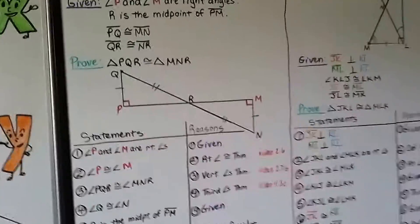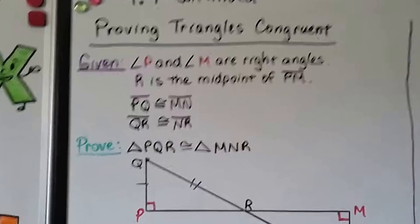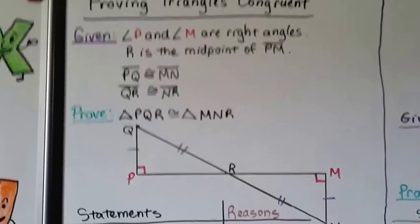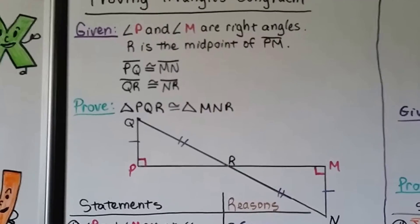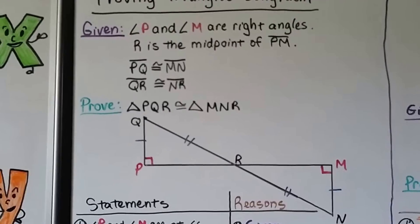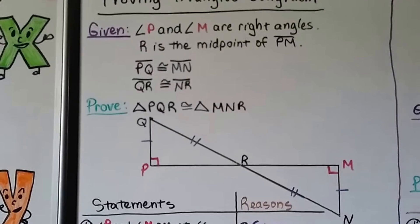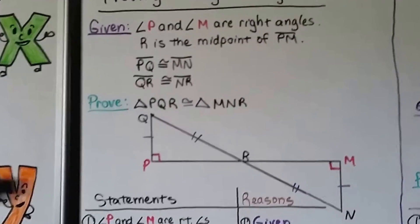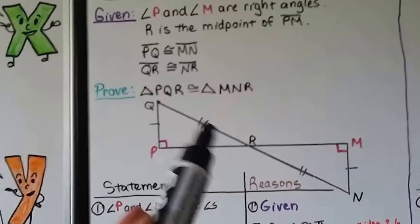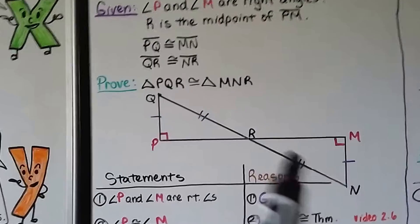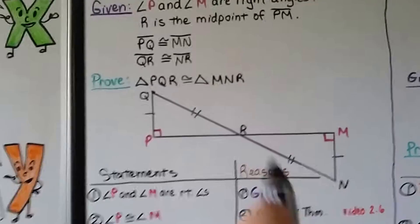Now we have two-column proofs to prove triangles congruent. For the first proof, the given states: angle P and angle M are right angles; R is the midpoint of segment PM; segment PQ is congruent to segment MN; and segment QR is congruent to NR. We need to prove that triangle PQR is congruent to triangle MNR.